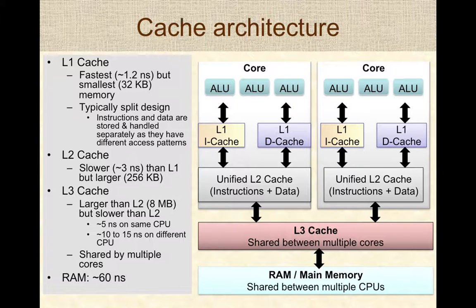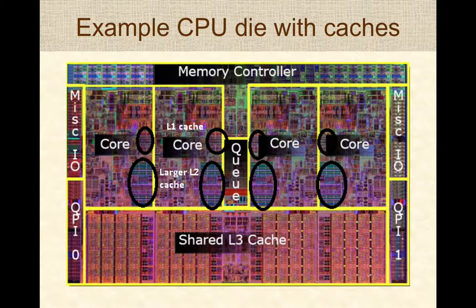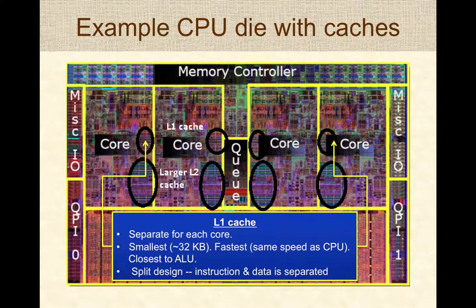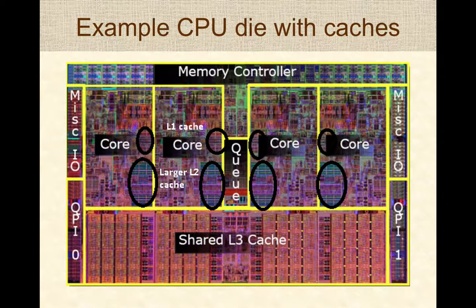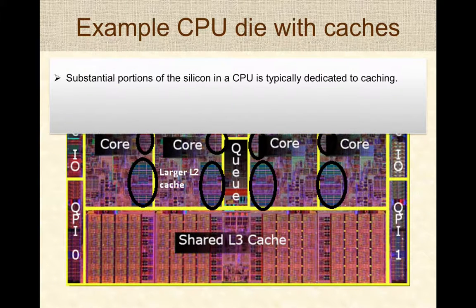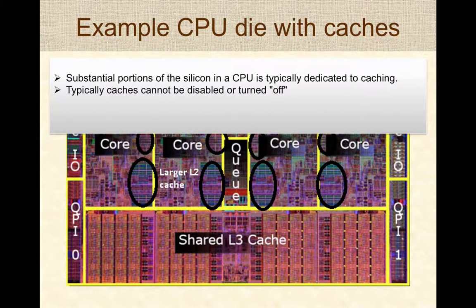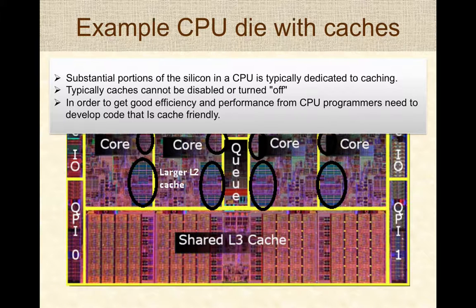All interactions between the ALU and RAM happen through these tiers of caches. Looking at an actual CPU die, you can see the L1 cache on a per-core basis, the L2 caches, and a large shared L3 cache. Notice that substantial portions of the silicon in the CPU are dedicated to fabrication of the caches. Since caching cannot be turned off, programmers need to be aware of caching and develop cache-friendly code.